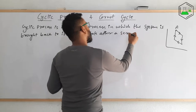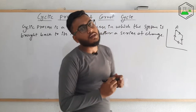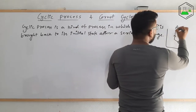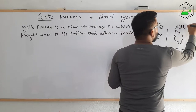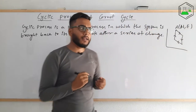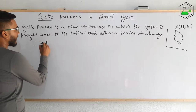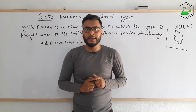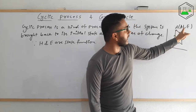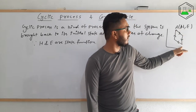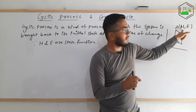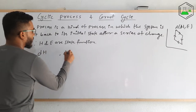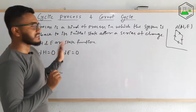After a series of changes the system will be brought back to its original or initial state in a cyclic process. At point A the enthalpy is H and internal energy is E. Since enthalpy and internal energy are state functions — meaning they only depend on the initial state and the final state, not on the path — after a series of changes it returns to the same state. So the net change in internal energy and enthalpy will be zero.